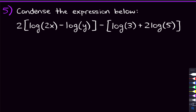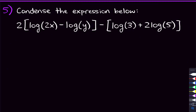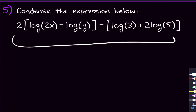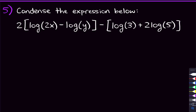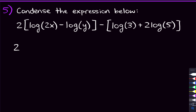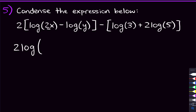For our last problem, instead of expanding a log, we're going to be condensing a whole expression with logs in it. The first thing to do is focus on the brackets. Before dealing with anything outside the brackets — like the two being multiplied out front or the minus sign subtracting these two things — let's simplify what's in the brackets first. In the first bracket, we have two logs being subtracted, which means we can combine them into one log where the arguments are being divided: two x divided by y. Remember, subtraction means we divide.